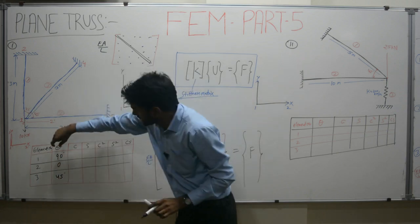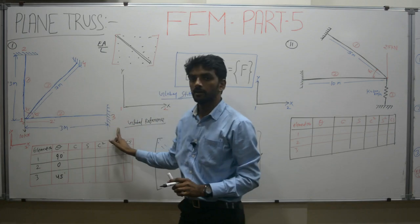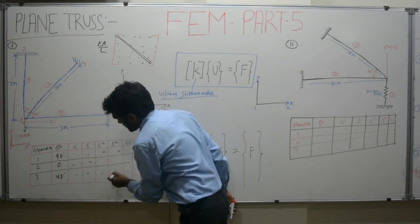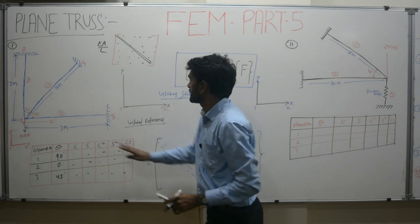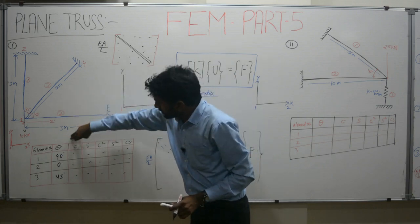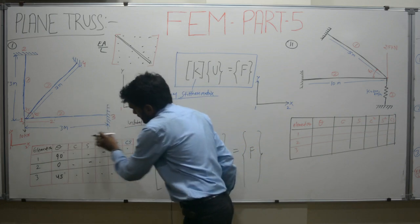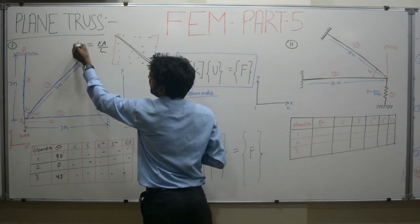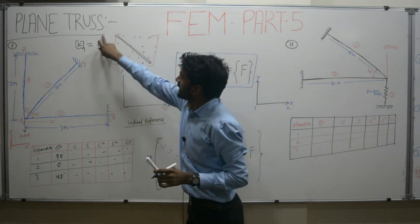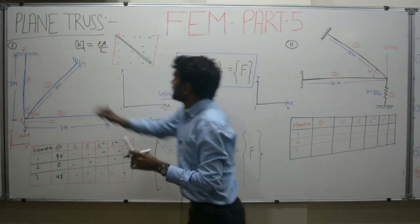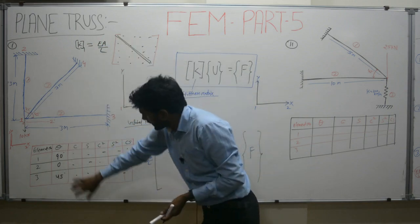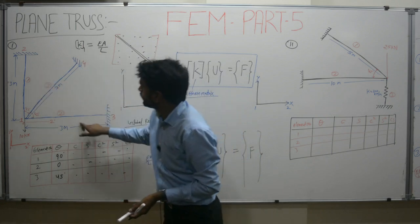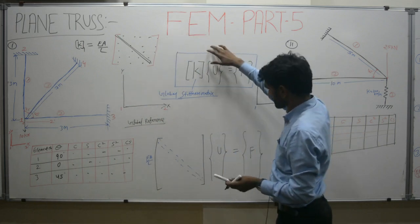Once the theta value for each member of the truss is calculated, you fill in sinθ, cosθ, and the remaining values in the table using a calculator. After filling the table, you formulate the local stiffness matrices k1, k2, and k3. The parameters E, A, and L are already given in the problem. Using these values you fill each local stiffness matrix for elements 1, 2, and 3, and then formulate the global stiffness matrix.